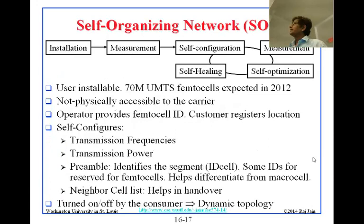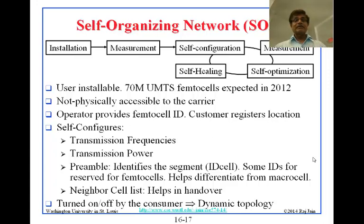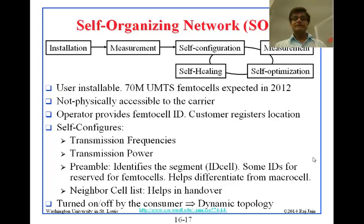Self-organizing networks means there are several phases in the lifecycle: installation, measurement, configuration, then continuous measurement and optimization. If there is a problem, there is cell healing, then reconfiguration and measurement again — this continues throughout the lifecycle. Femtocells are designed to be self-organizing: they install, measure, and once in operation they measure the interference level, determine what to do, reconfigure, optimize, and handle breakdowns via cell healing.